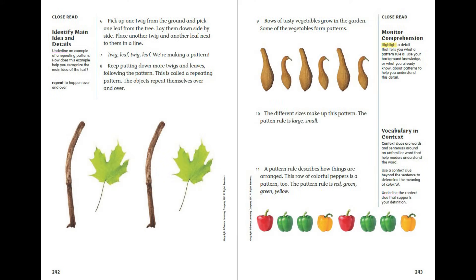Pick up one twig from the ground and one leaf from the tree. Lay them down side by side. Place another twig and another leaf next to them in a line: twig, leaf, twig, leaf. We're making a pattern! Keep putting down more twigs and leaves following the pattern. This is called a repeating pattern — the objects repeat themselves over and over.